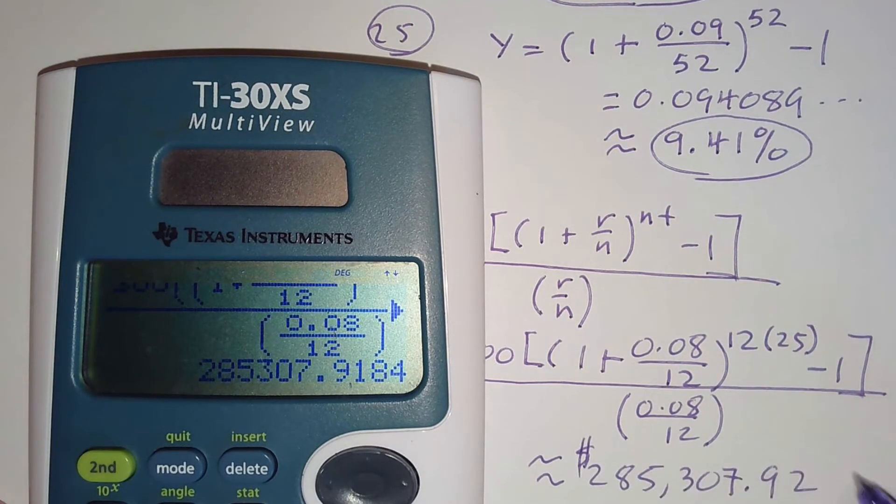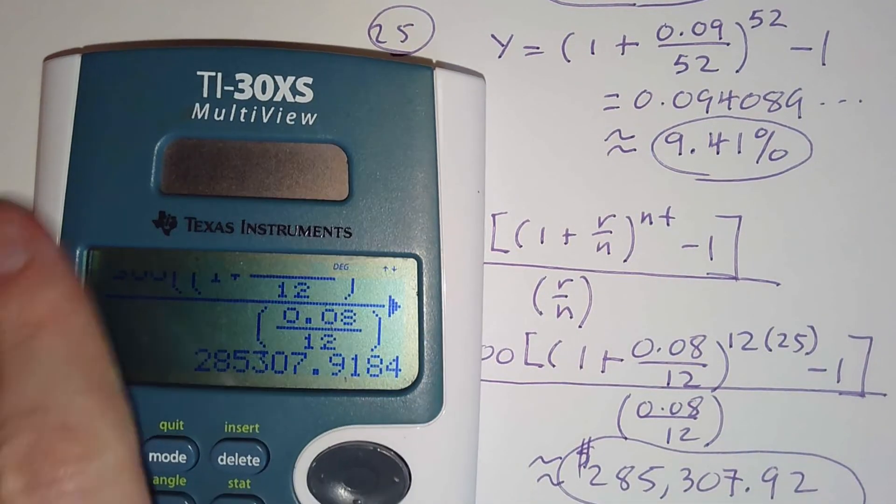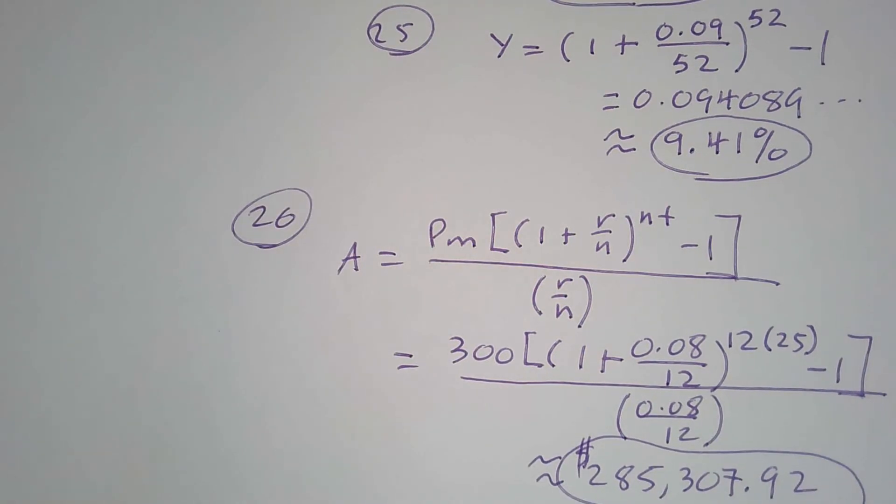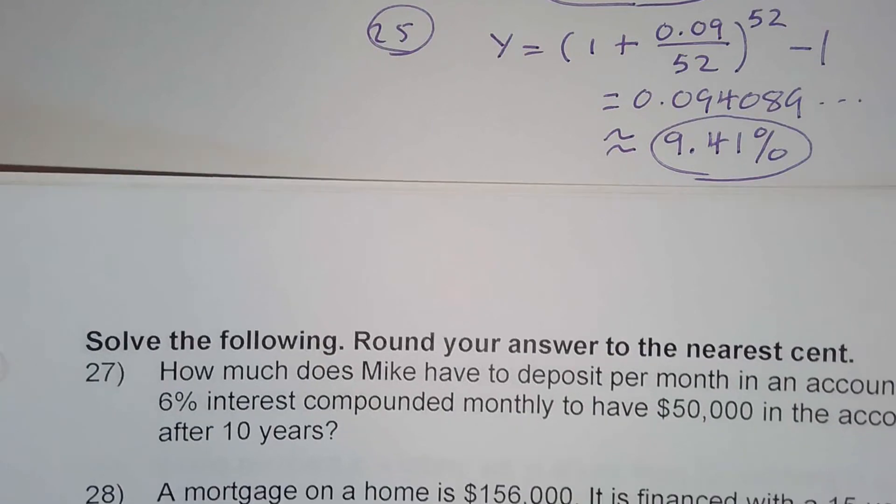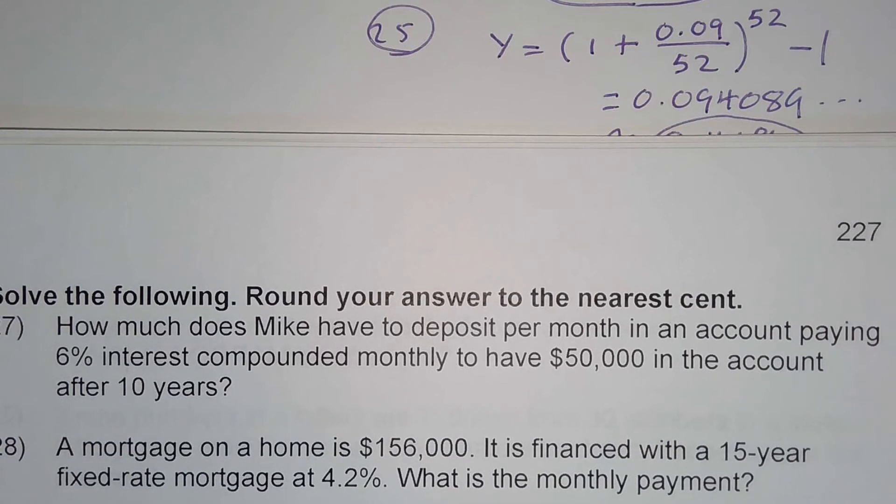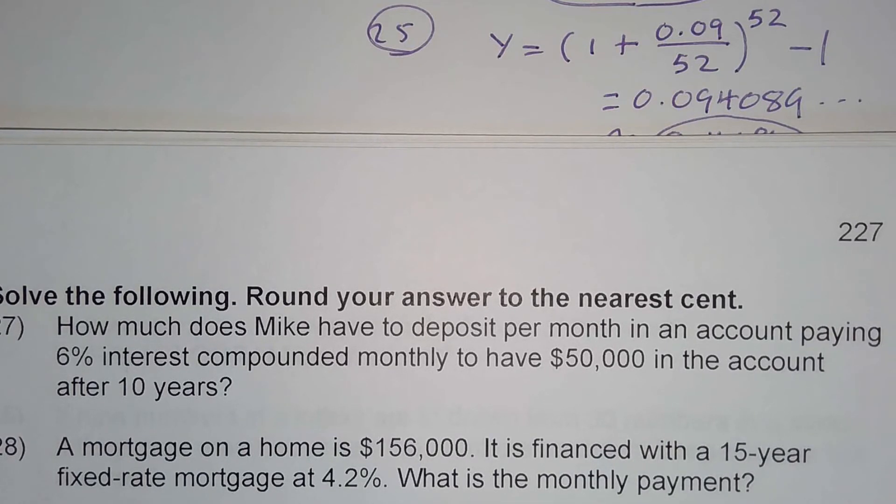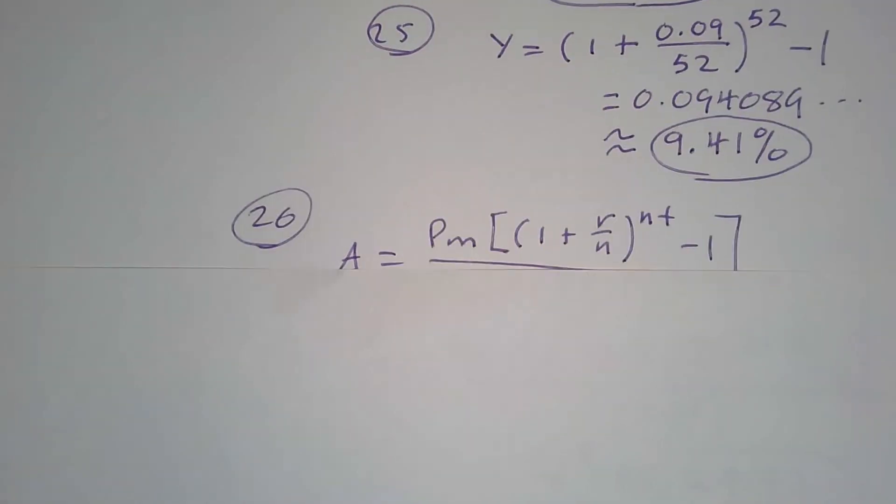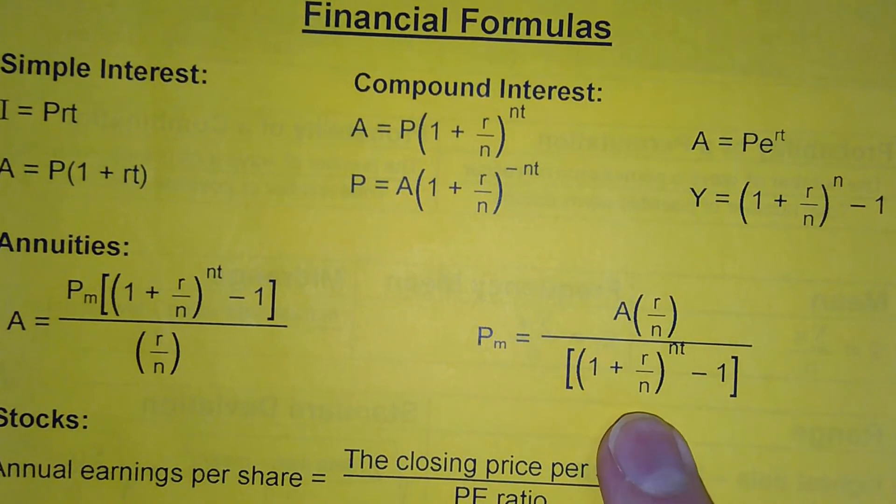Let's turn the page and take a look at number 27. How much does Mike have to deposit per month in an account paying 6% interest compounded monthly to have $50,000 in the account after 10 years? All right, so I've got a clean sheet of paper here. Again, we're putting money in per month, but now we want to figure out how much we're putting in per month, so now we're using this formula here.